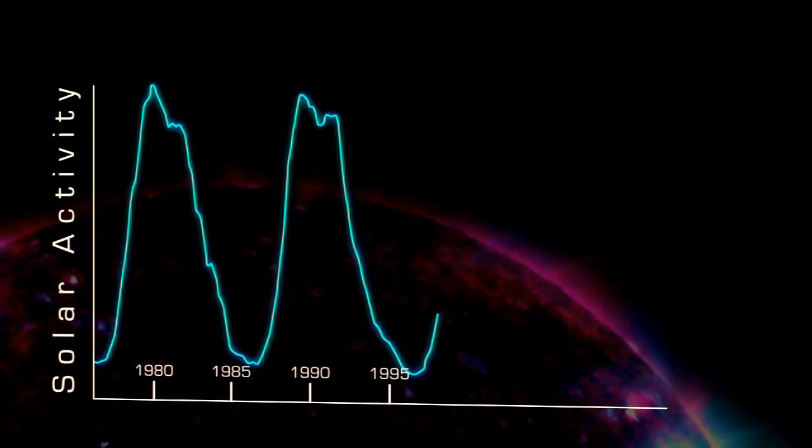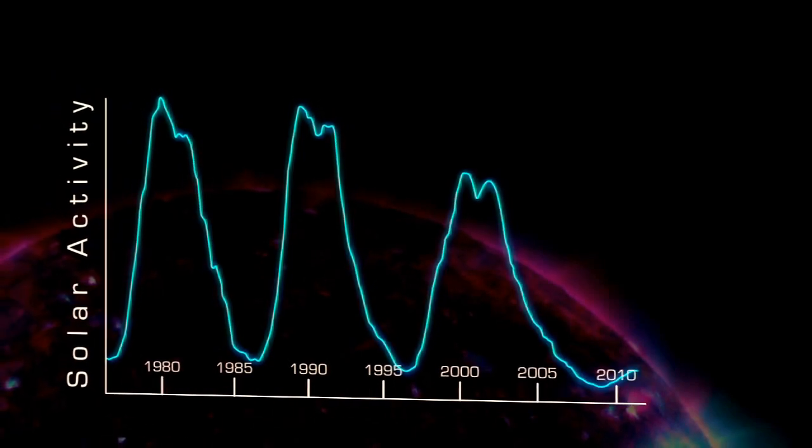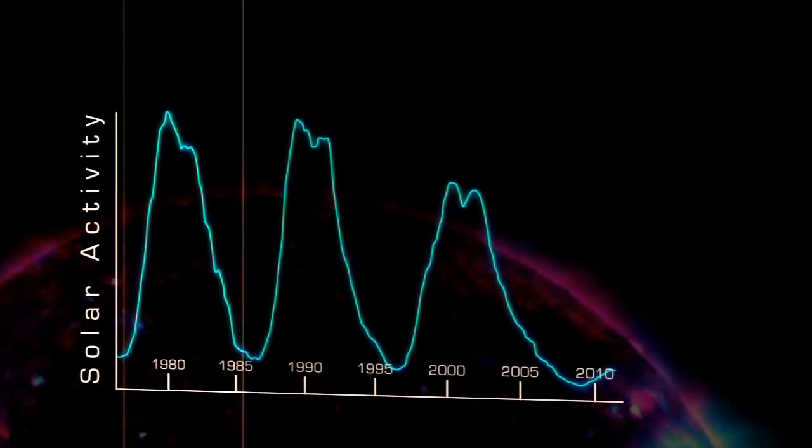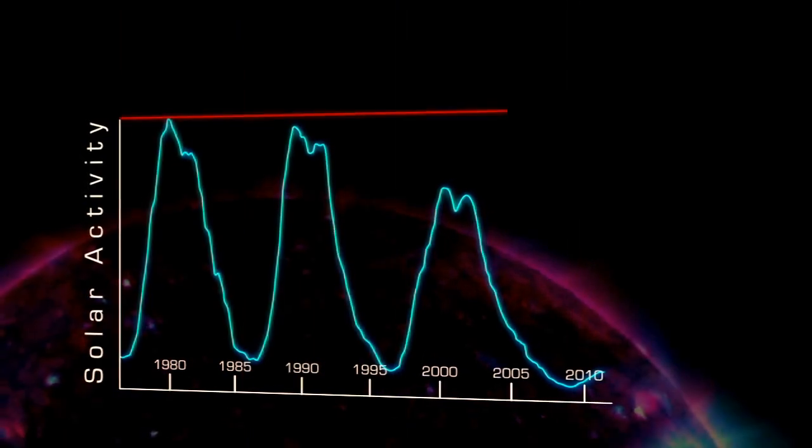This pattern is called the sunspot cycle, and a single cycle lasts for about 11 years, although it can be as short as 8 or as long as 14, and it can vary dramatically in intensity.